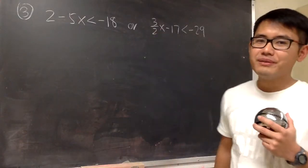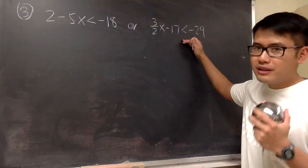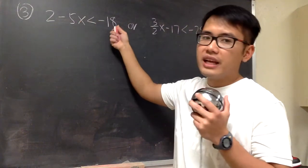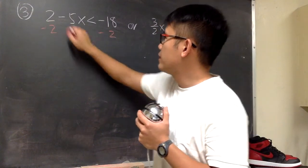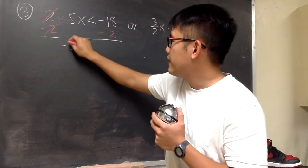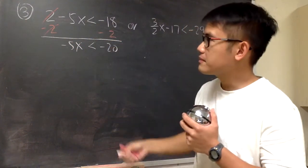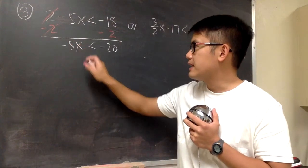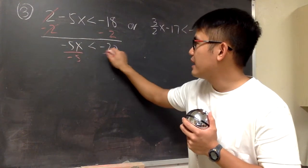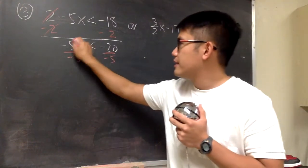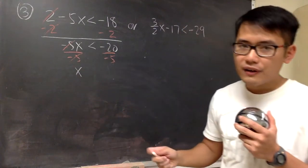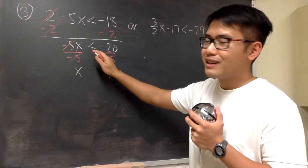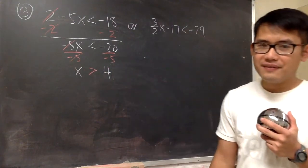For another example, this time we have an OR situation, so we work out each inequality separately and then put the answers together. The first one: 2 minus 5x is less than negative 18. We subtract 2 from both sides to get negative 5x less than negative 20. Then we divide both sides by negative 5, and since we divided by a negative number, less than becomes greater than, giving us x greater than 4.